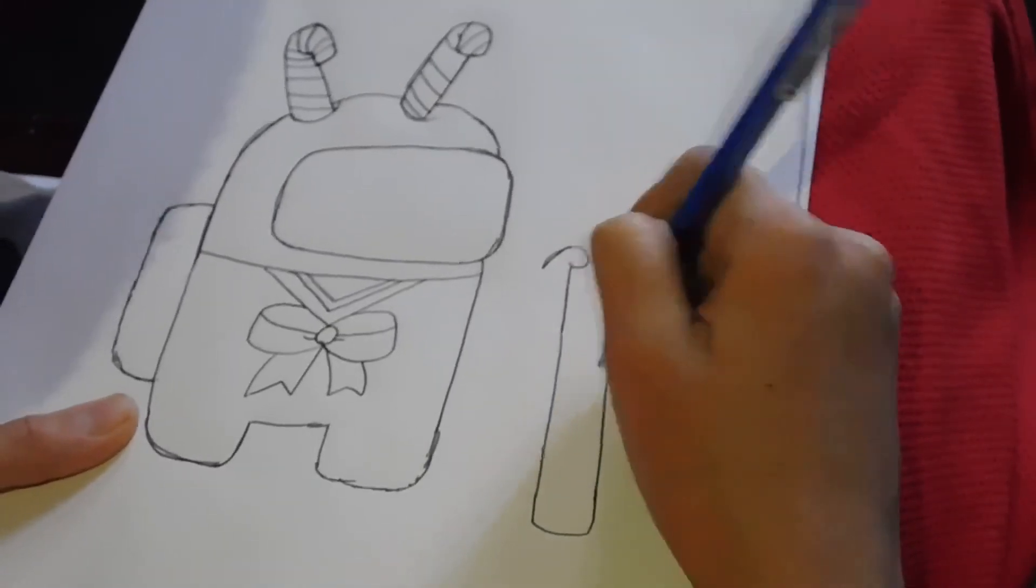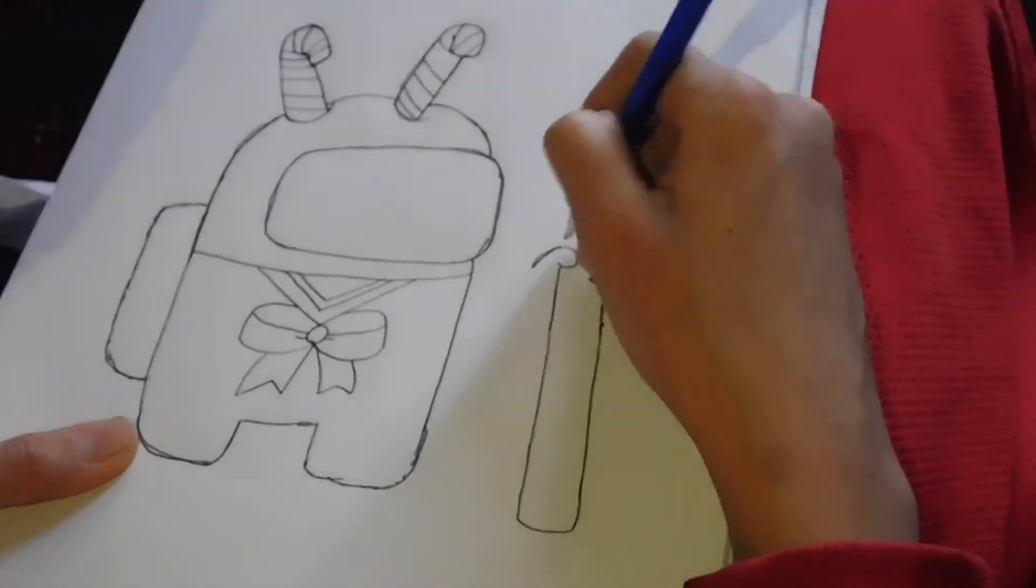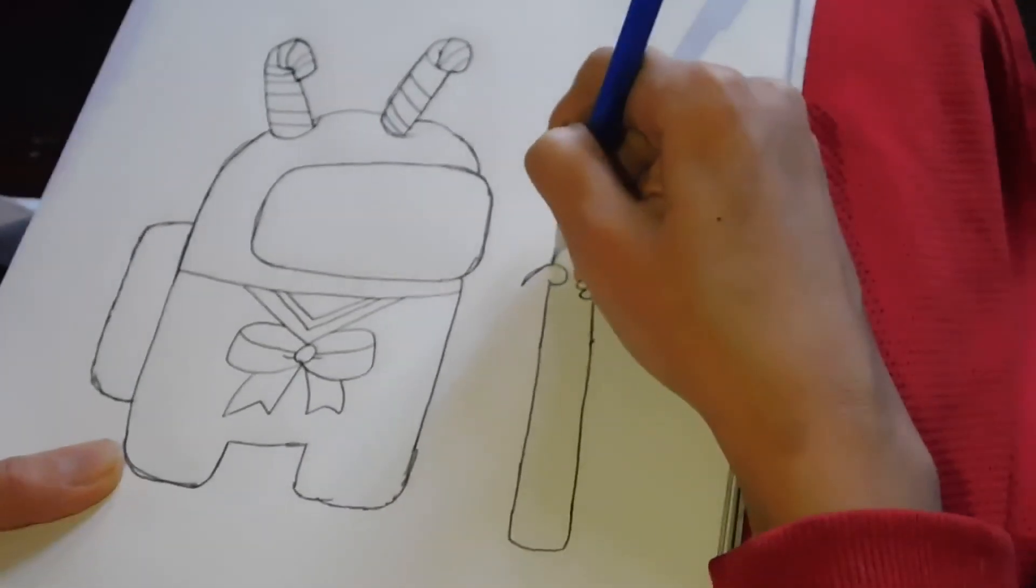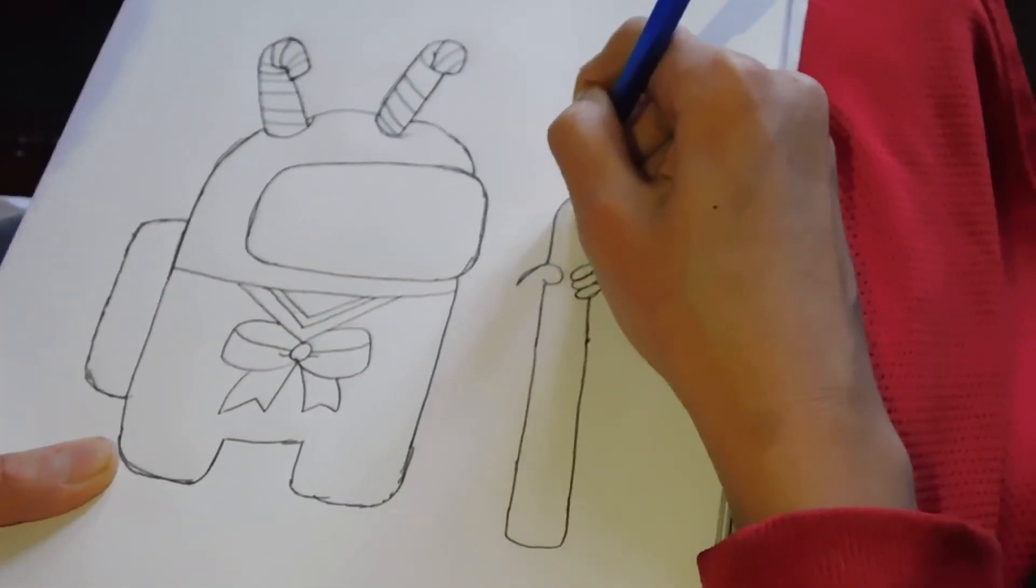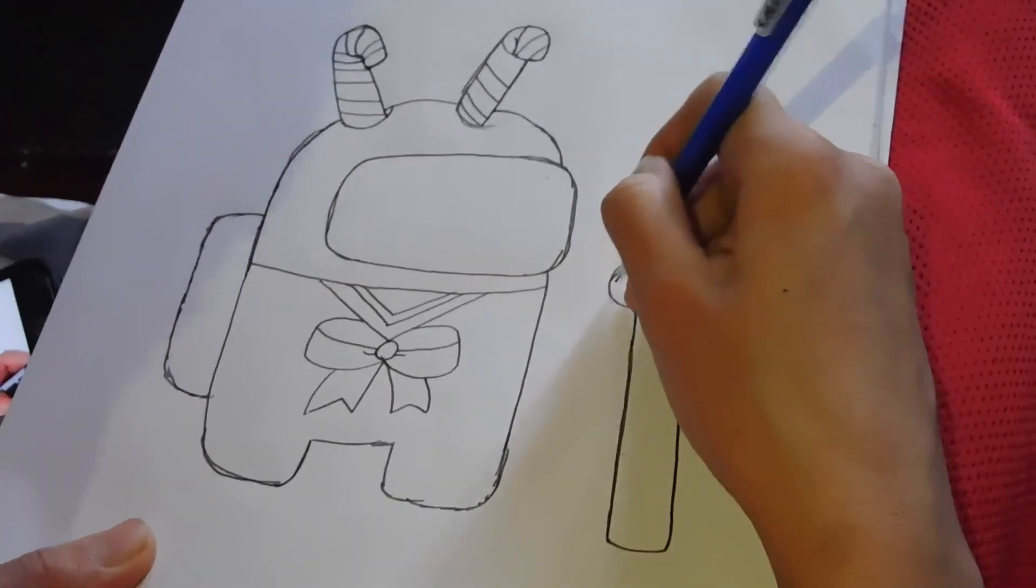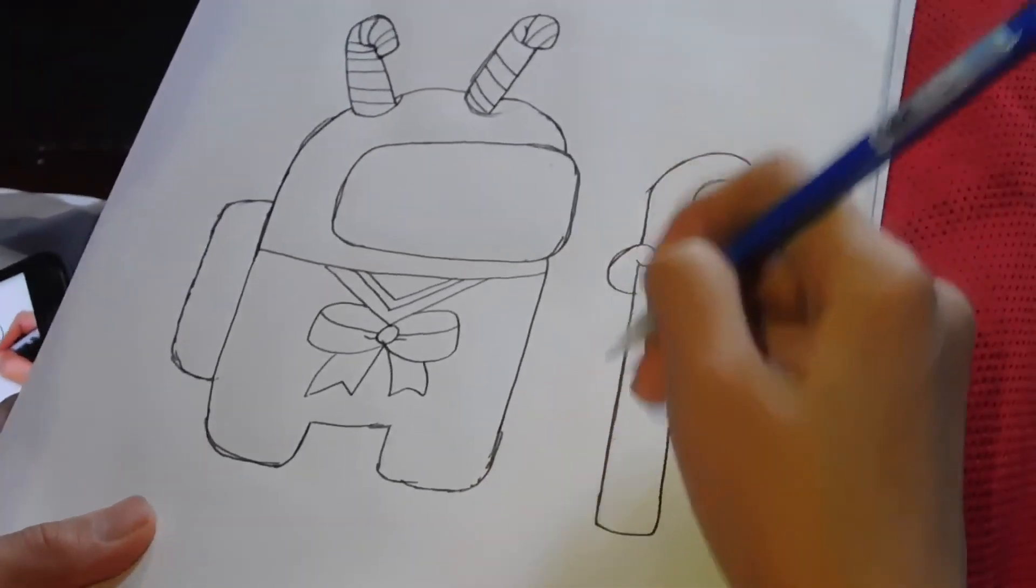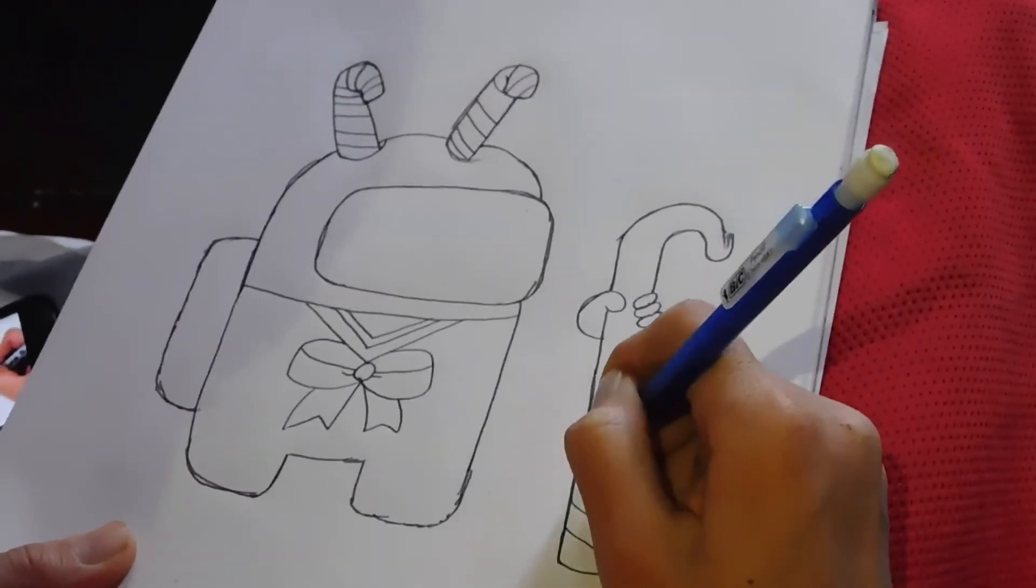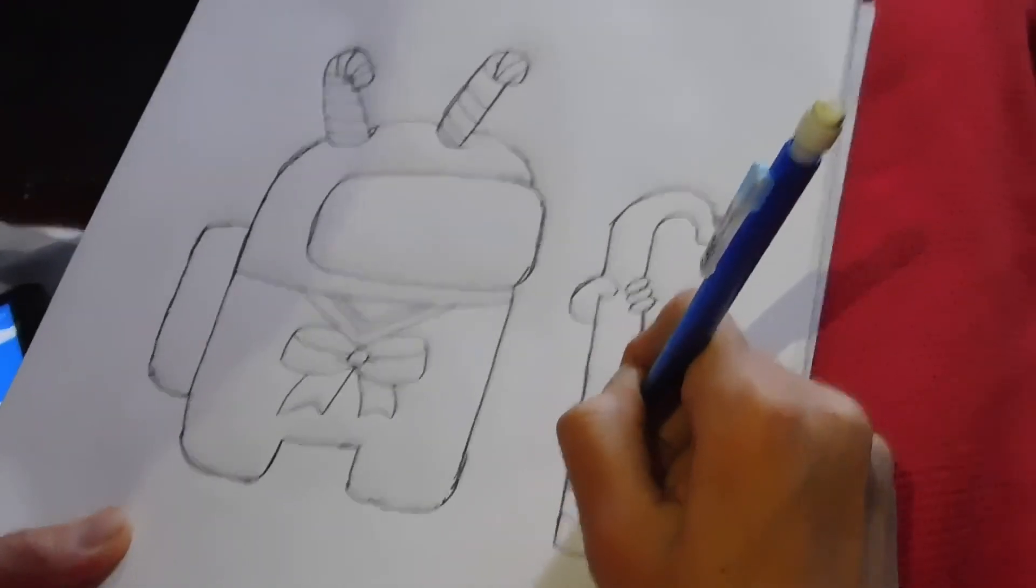You guys can outline it any way you want with a marker. You can leave it just with a pencil. Usually I like going over it with a pen, but for this one I'm not. Alright, now you guys can finish the arm by closing it in. After that, you guys can start drawing the lines.